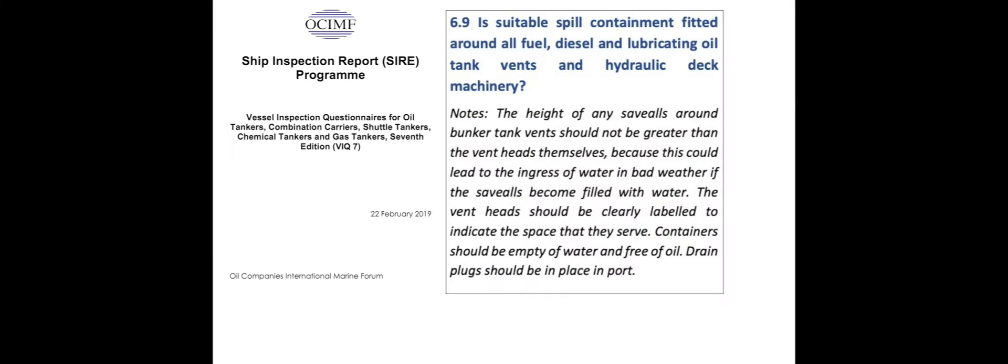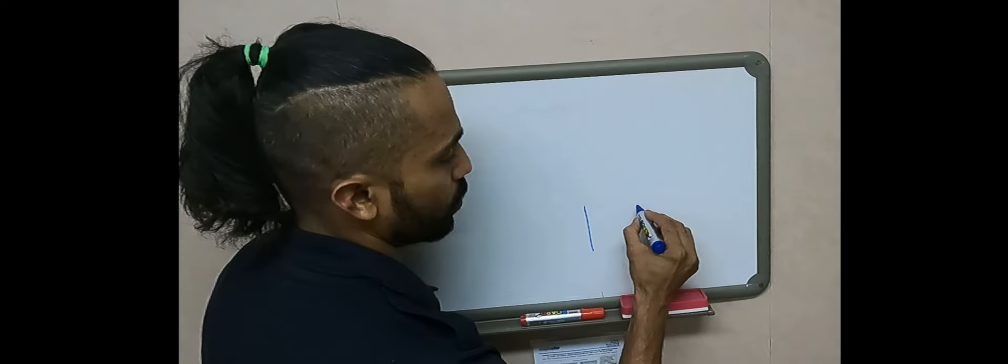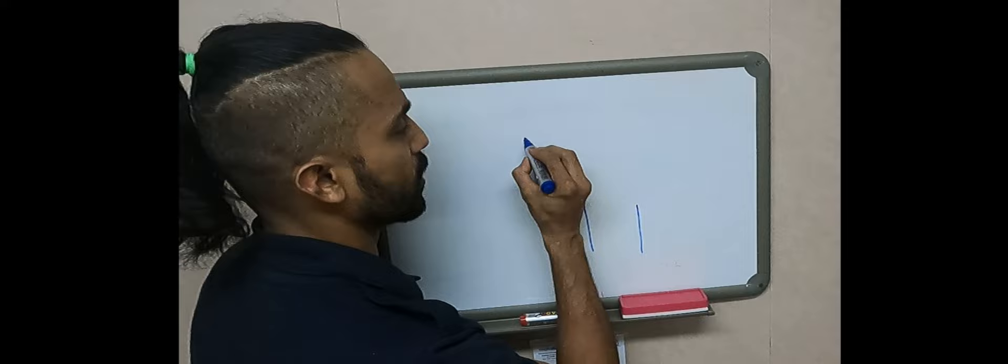Let's read the regulations by the OCIMF for spill containment fitted around fuel and diesel tanks - that's basically the save wall and the vent head requirement. And after this, let's go into a basic sketch and some very simple explanation of a vent head. So this is a vent head that's supposed to be on a tank.